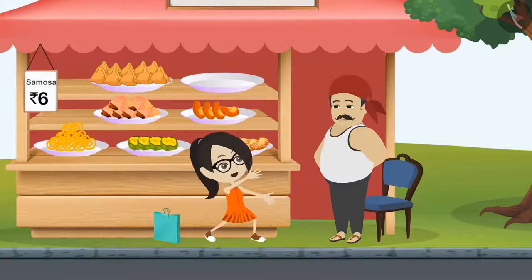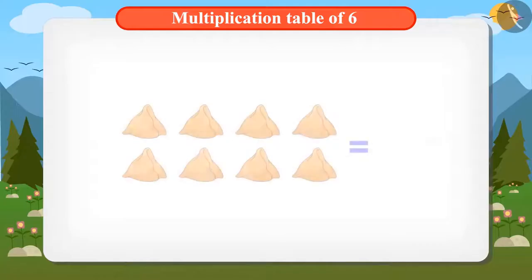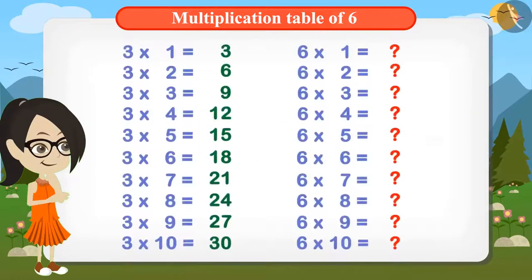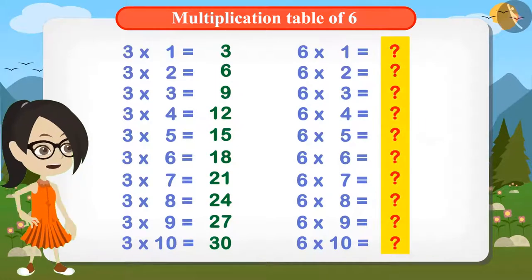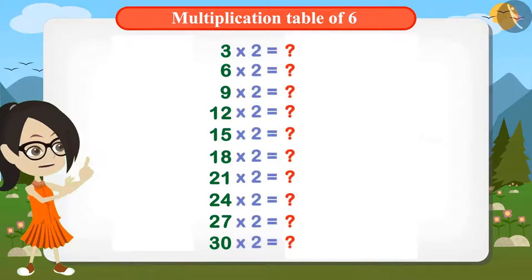Vandana exclaims: "Wow, Chaggu Uncle, this method is very good! Now I will find out the cost of eight samosas." You can also help Vandana find the table of six from the table of three. To find the multiplication table of six, multiply two with each answer from the multiplication table of three.